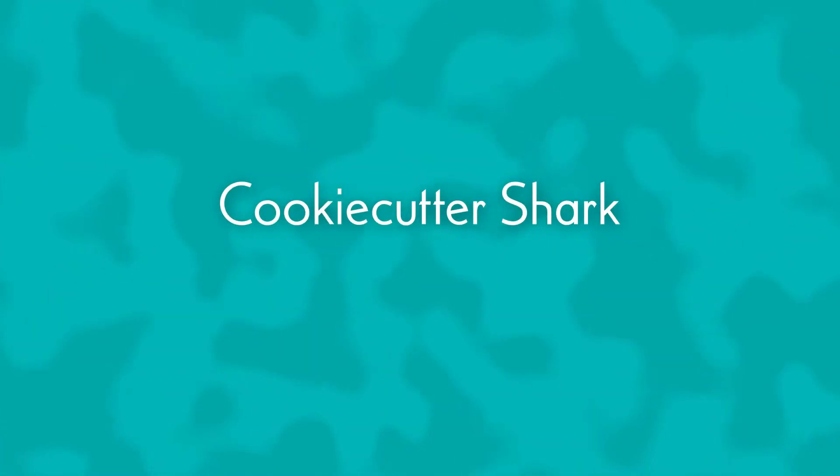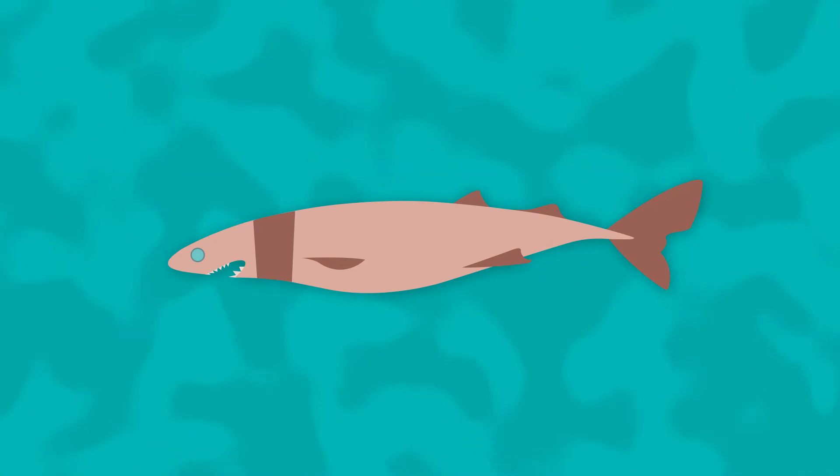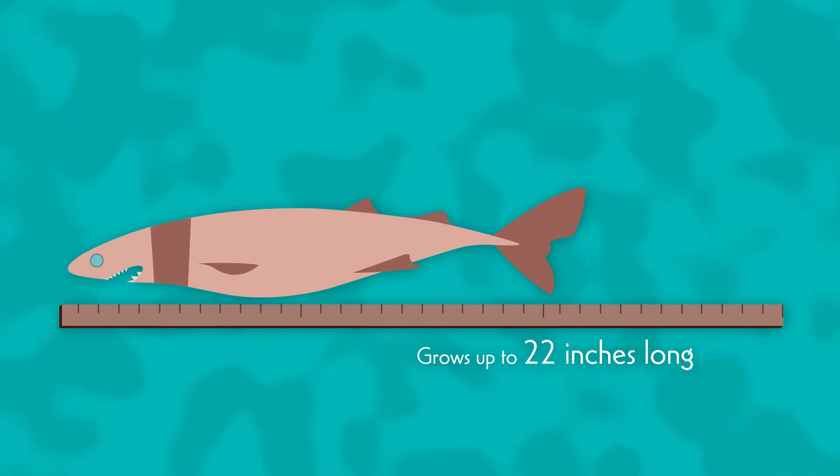The cookie-cutter shark, also called the cigar shark or the luminous shark, is a small brown shark with little fins, large green eyes, and a dark brown band around their necks, sometimes called a dog collar. They can grow up to 22 inches in length.